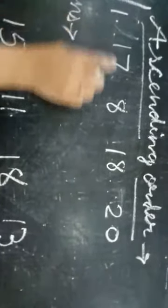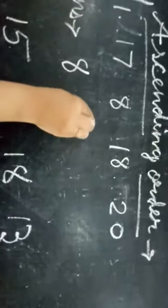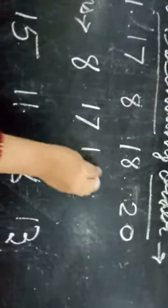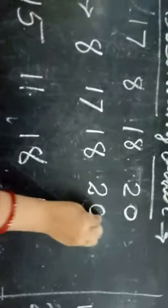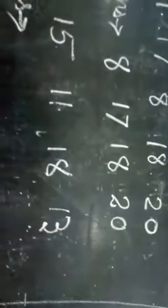The next is 17. So we can write 17. The next is 18. The next, the last is, biggest number is 20. Now this is a ascending form.